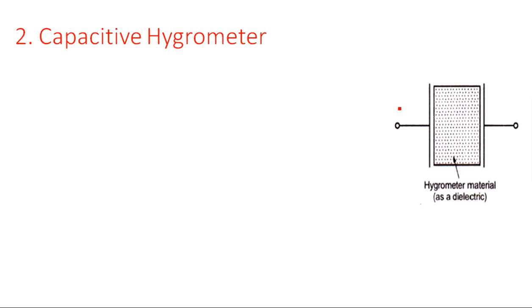The second type is the capacitance hygrometer, where capacitance changes depending on moisture or humidity. A capacitor is made of two conducting plates separated by a dielectric material. Here, a hygroscopic material is used as the dielectric between the two plates. Because of this material, whatever change occurs in the humidity of the atmosphere is collected, varying the dielectric property and thus the capacitance value.